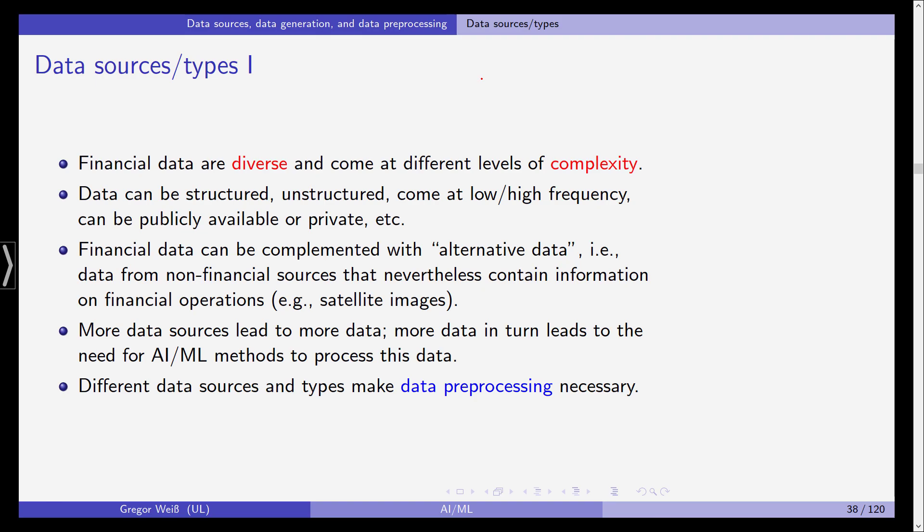So more data sources lead to more data, more data in turn leads to the need for AI and ML methods to process this data, but also of course for big data algorithms. But then, different data sources - structured, unstructured, high, low frequency.